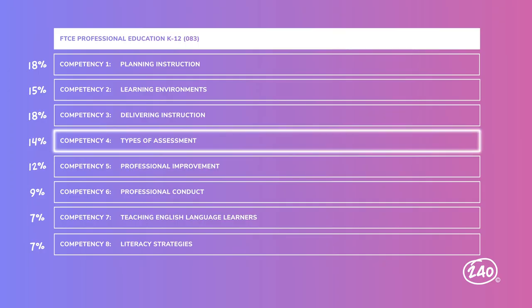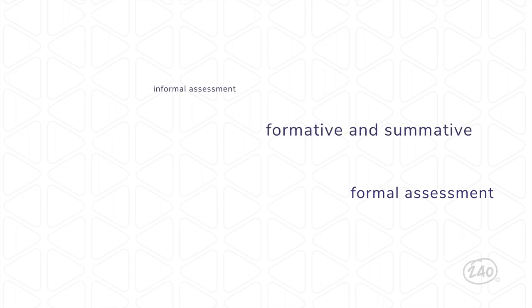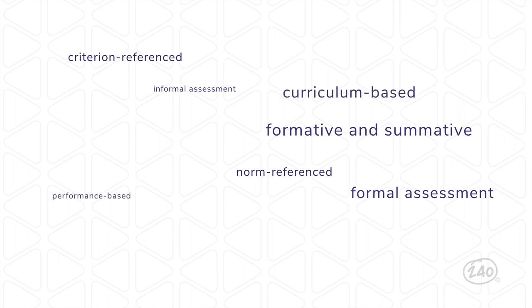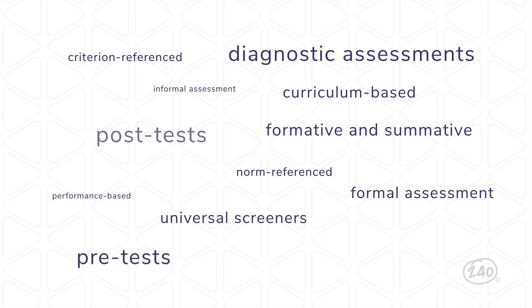We've planned and delivered instruction in a student-centered learning environment. Now let's assess the impact on student learning. There are tons of different ways to assess students, and you're going to need to be familiar with just about all of them. You'll want to know formal assessment, informal assessment, formative and summative, criterion-referenced, norm-referenced, curriculum-based, performance-based, universal screeners, diagnostic assessments, pre-tests, post-tests, how to progress monitor, and the list just goes on and on.